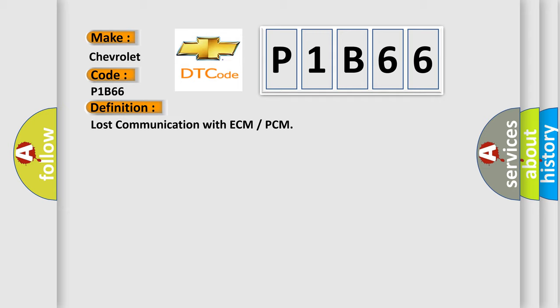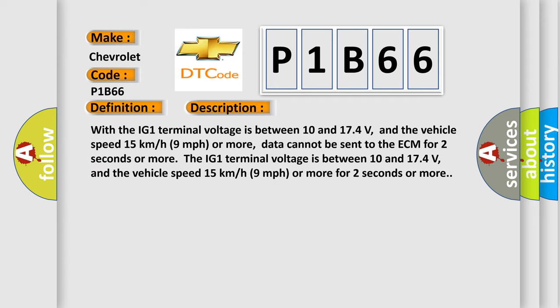And now this is a short description of this DTC code. With the IG1 terminal voltage between 10 and 174 volts, and the vehicle speed 15 kilometers per hour or 9 miles per hour or more, data cannot be sent to the ECM for 2 seconds or more.